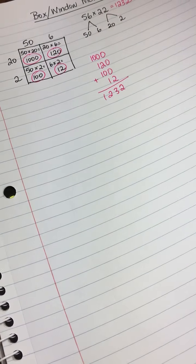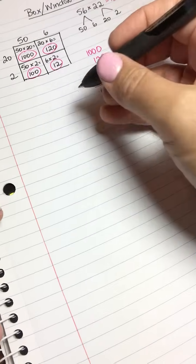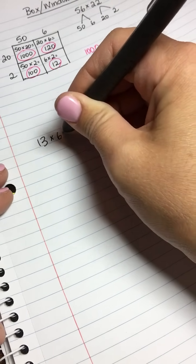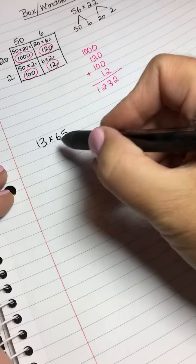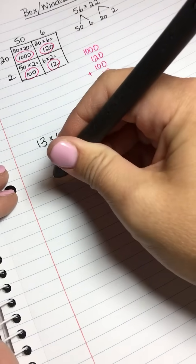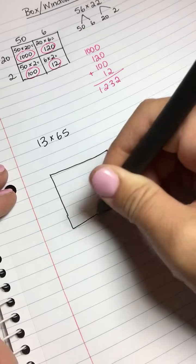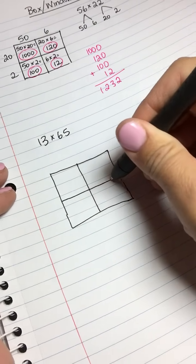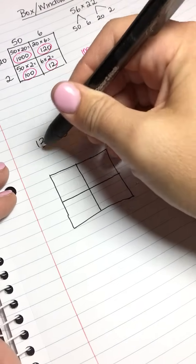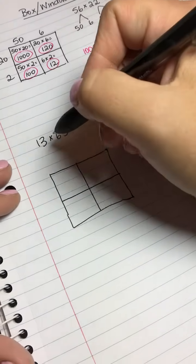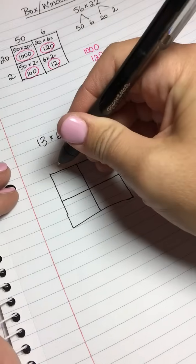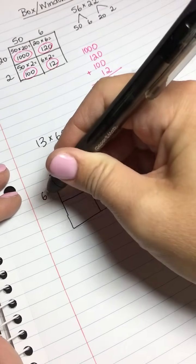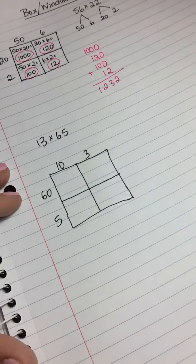Let's do another one. For the equation, let's say 13 times 65. This is two digits times two digits, so we need two rows and two columns. Let's draw our box or our window and divide it into two rows and two columns. Now we need to expand these factors, so the 13 is actually 10 and 3, and the 65 is actually 60 and 5.